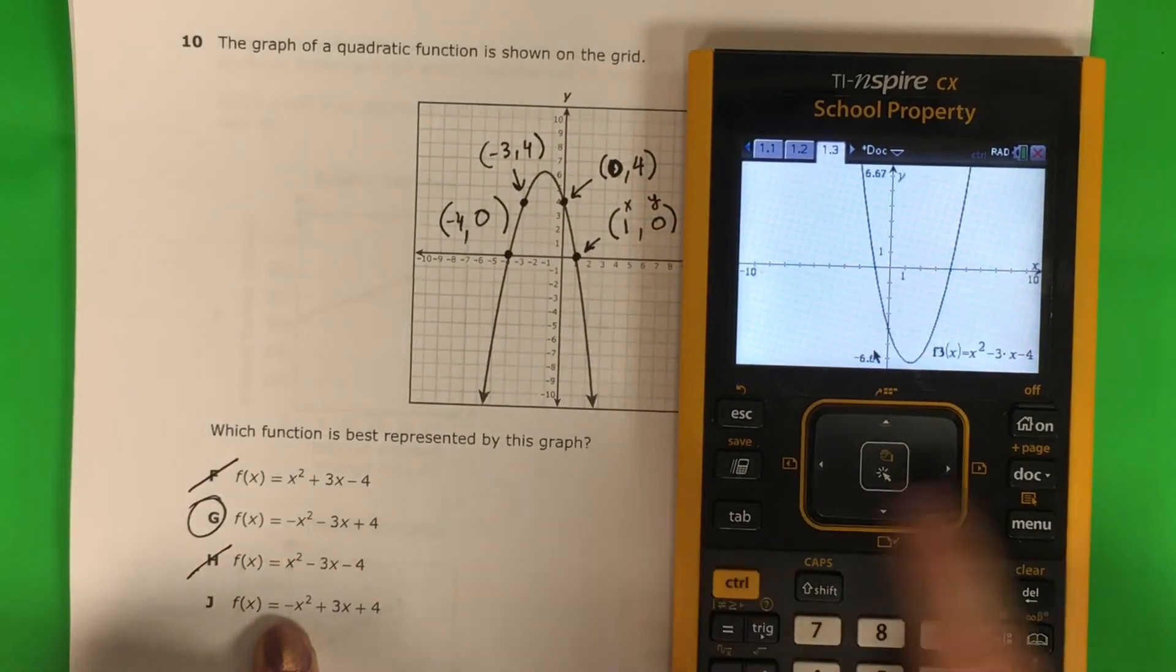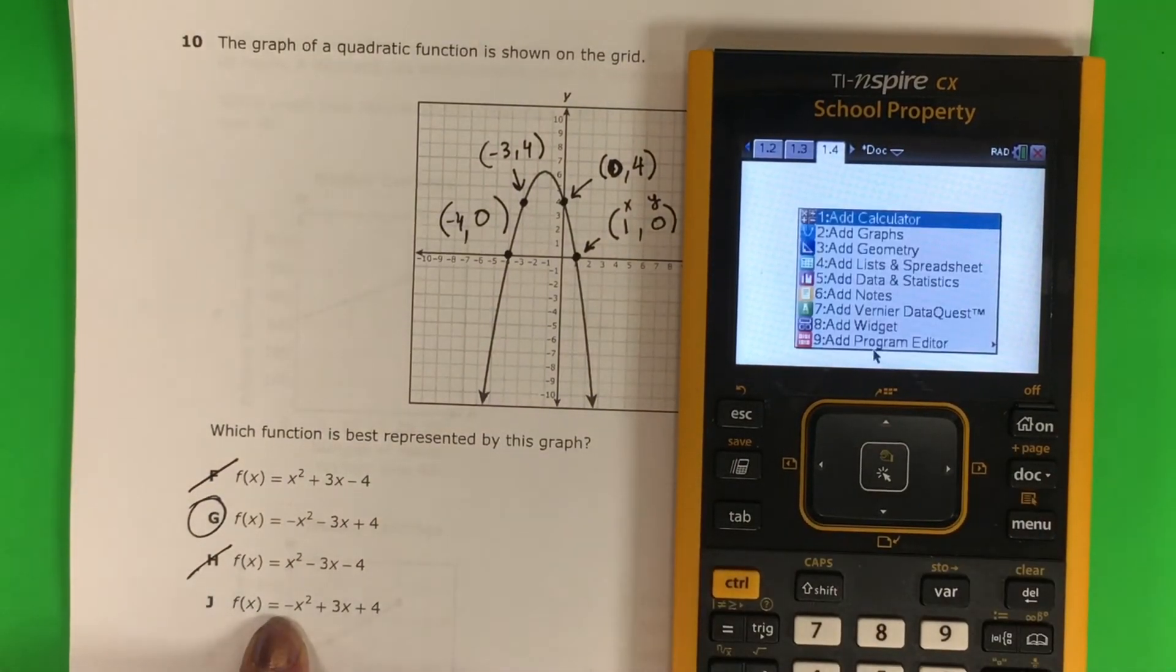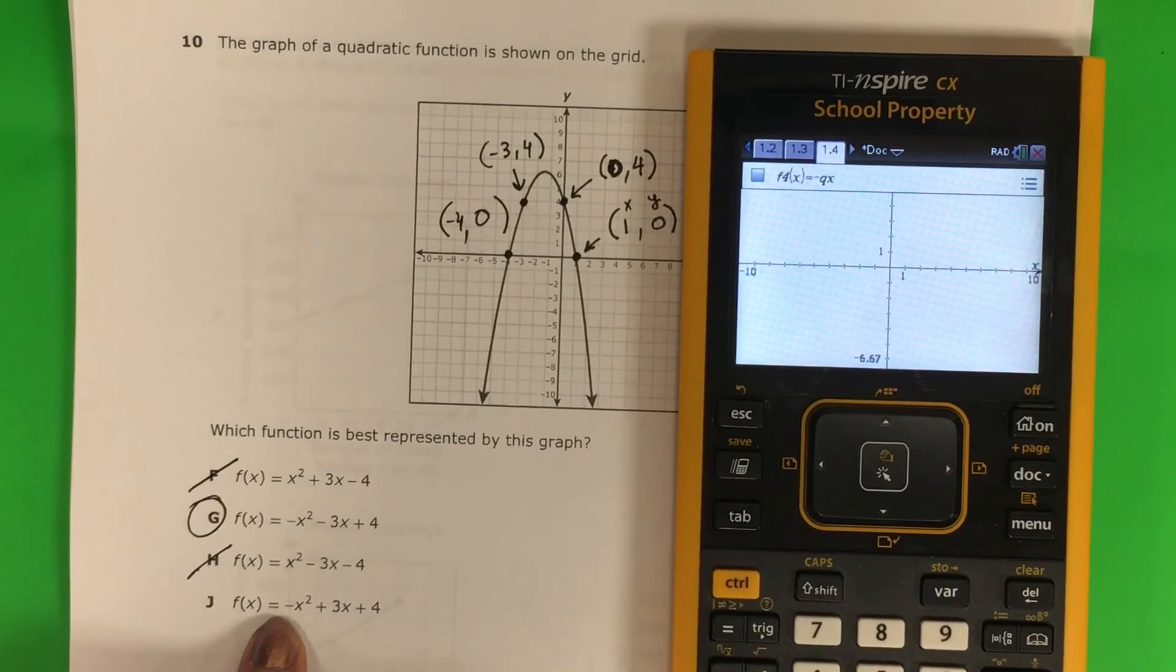Let's try J. Ctrl, doc, 2. Negative x squared plus 3x plus 4, enter.